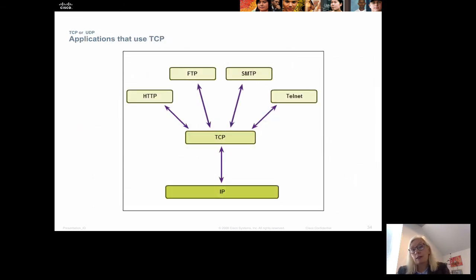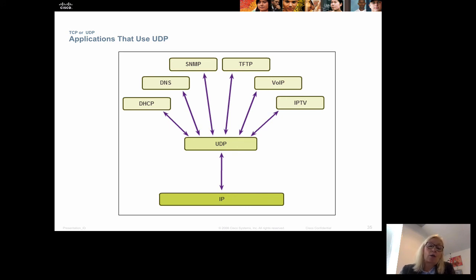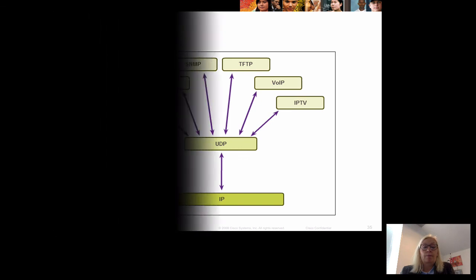Looking at protocols using TCP: HTTP for web traffic, FTP for file transfer, SMTP for mail, and Telnet all use TCP. Protocols using UDP include DHCP for assigning IP addresses, DNS for translating between IP addresses and domain names, SNMP for simple network management, TFTP, voice over IP, and IPTV all use UDP. And that's it.